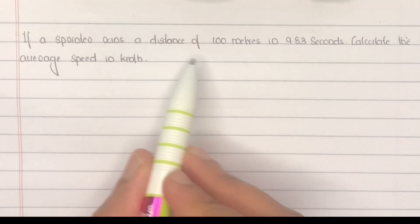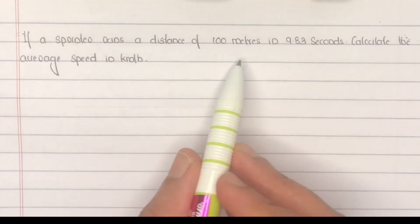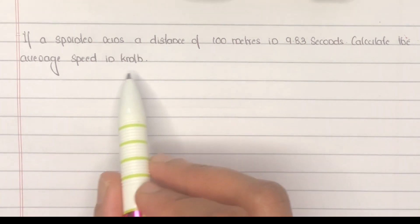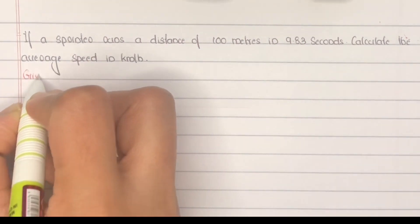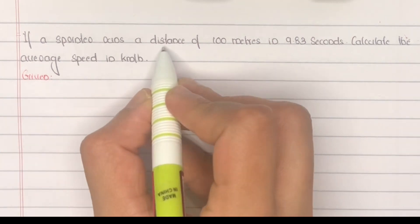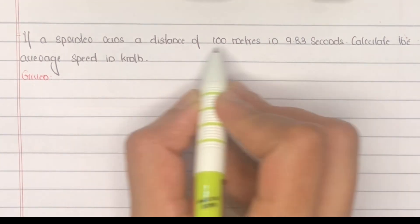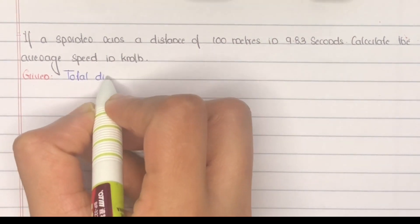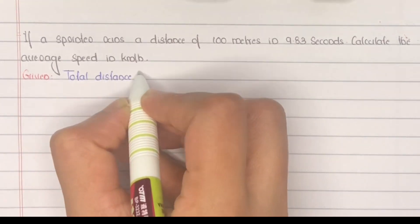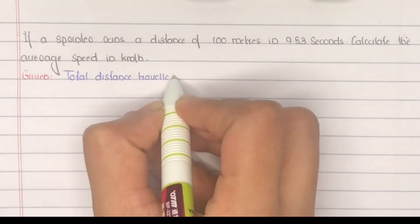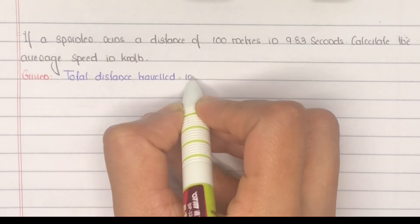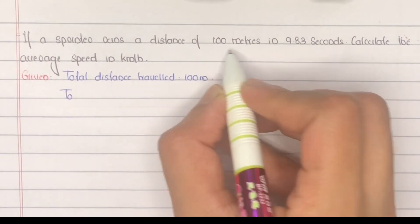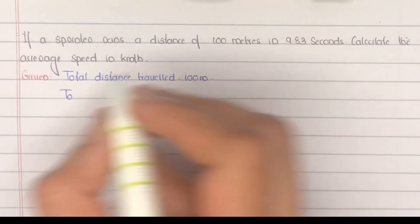If a sprinter runs a distance of 100 meters in 9.83 seconds, calculate the average speed in kilometers per hour. Given: total distance traveled is 100 meters, and total time taken to cover this 100 meters is 9.83 seconds.